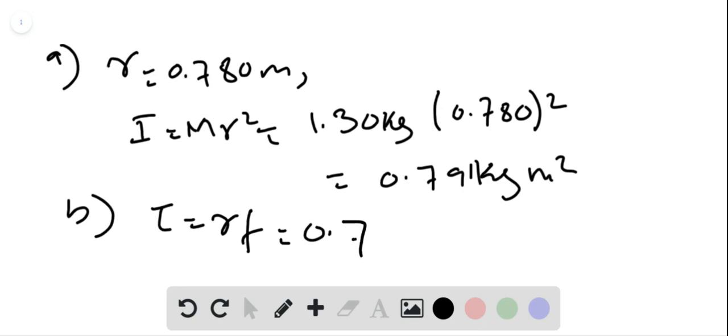Which is 0.780 times 2.30 times 10 to the power 2 newton. This will give us a torque of 1.79 times 10 to the power minus 2 newton meter.